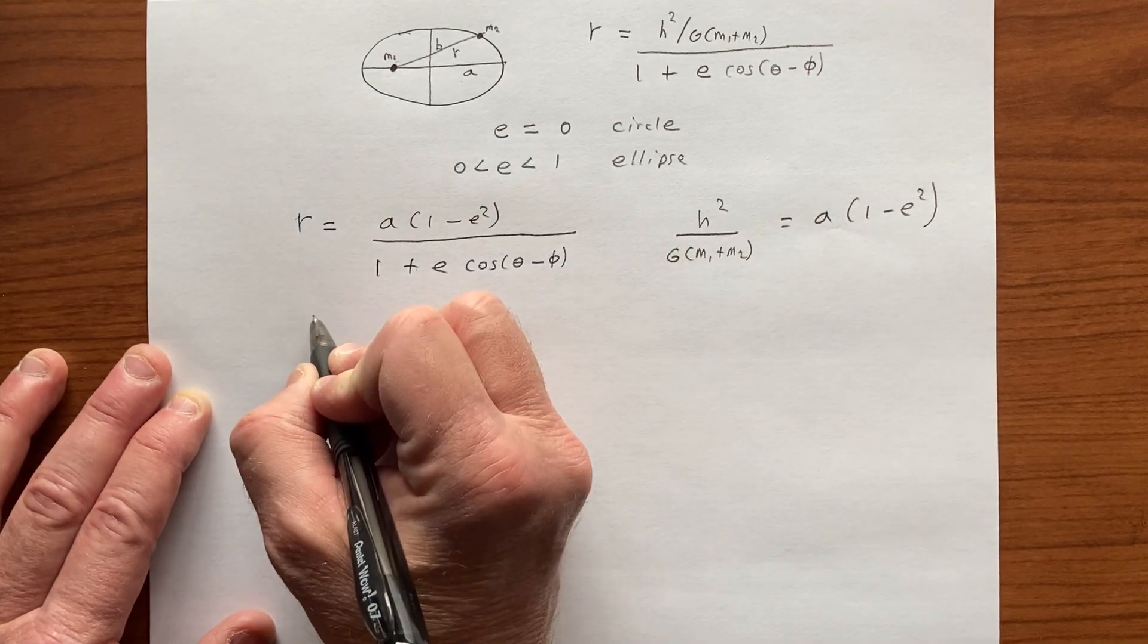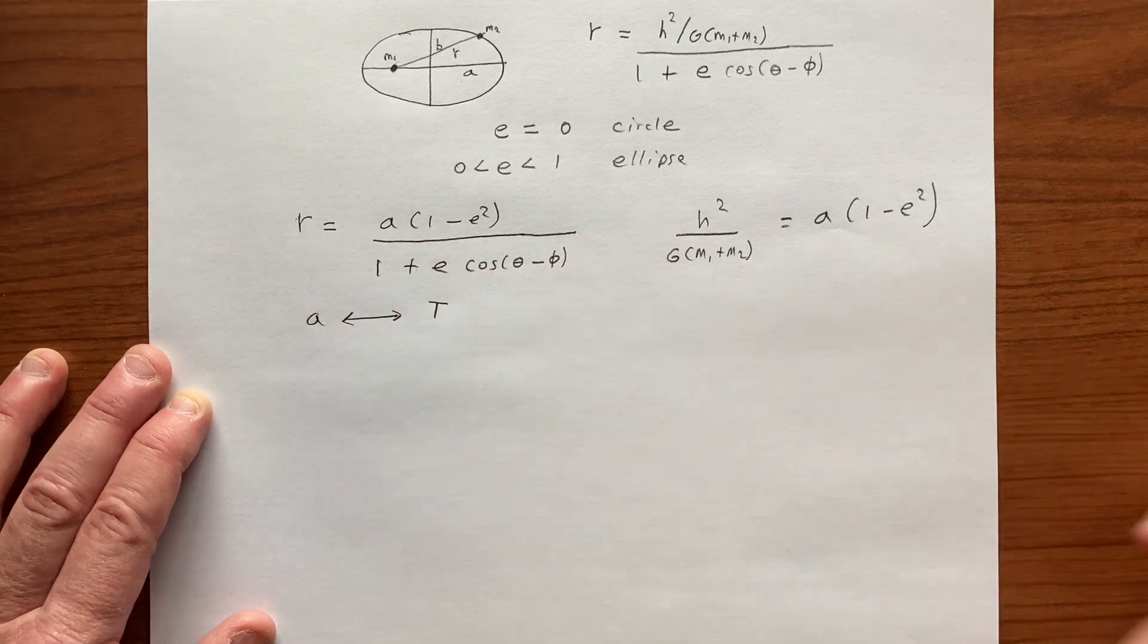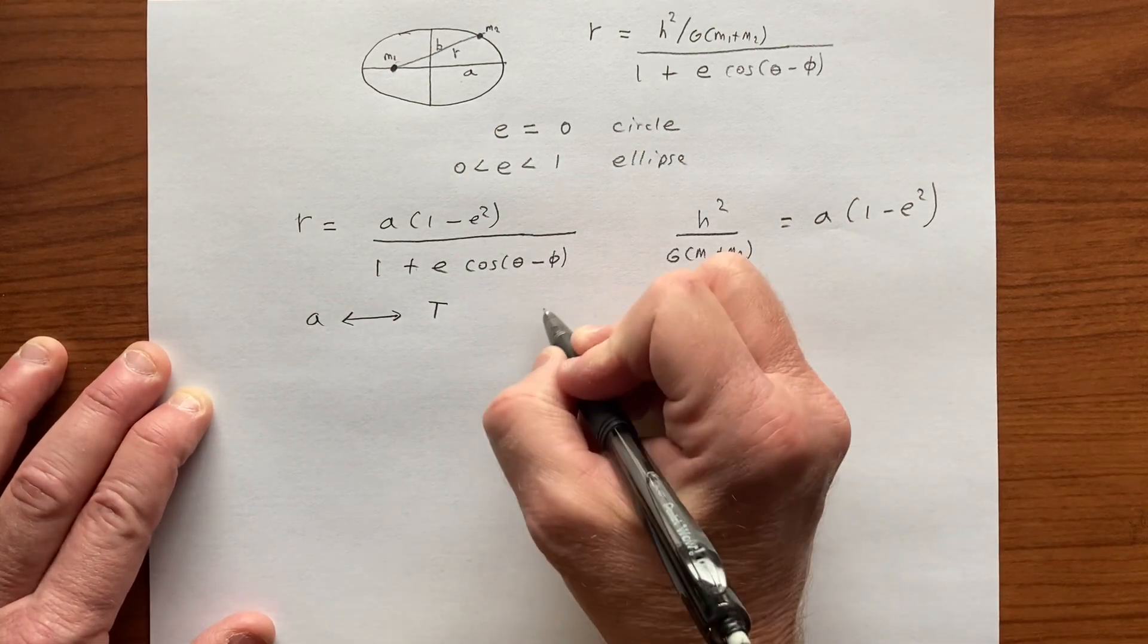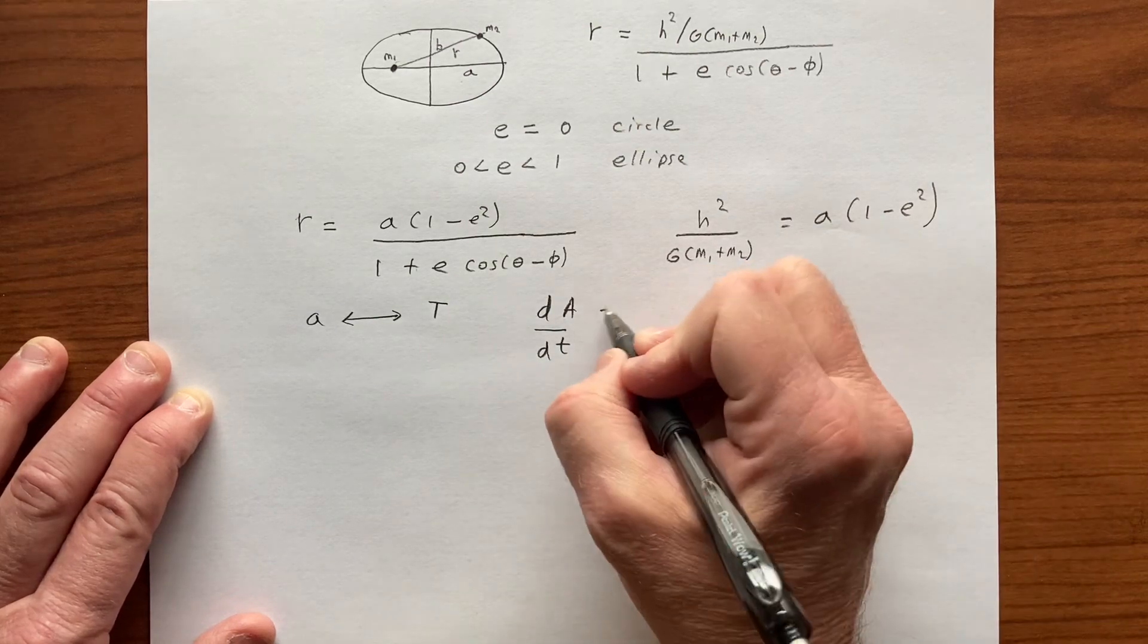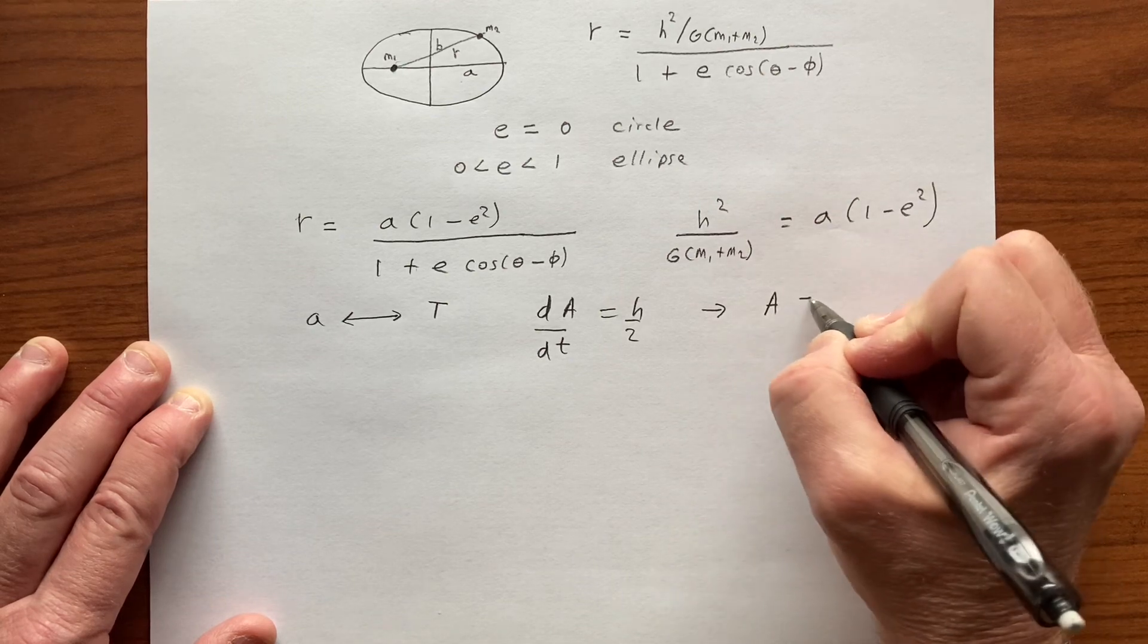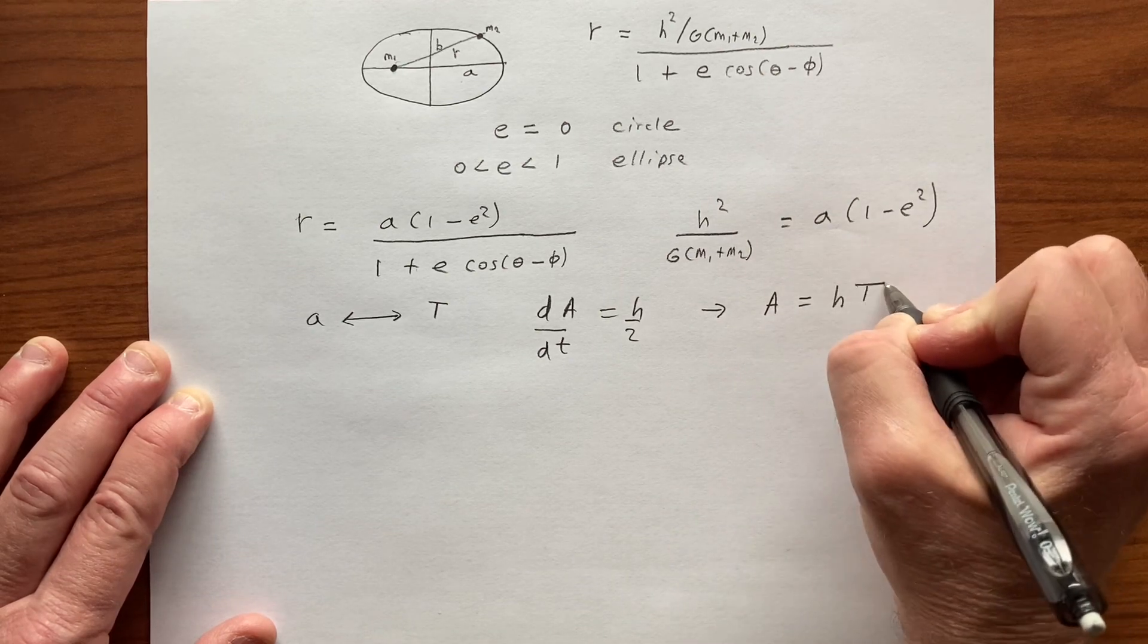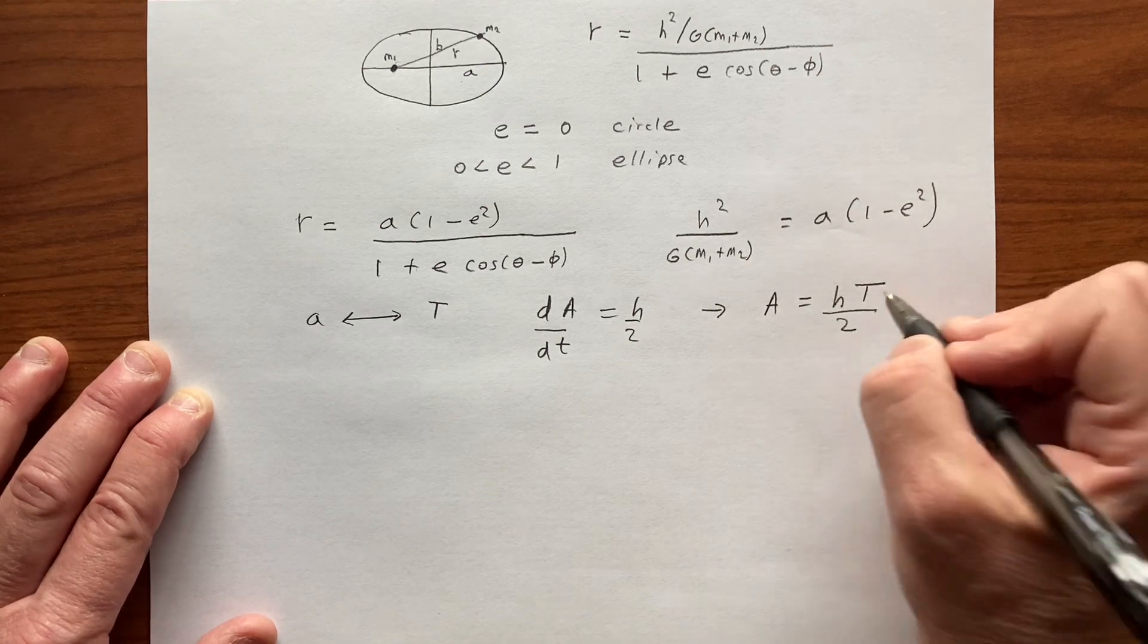So now we want to connect A from the major axis A to T, because this is Kepler's third law. And so from the second law, the rate of change of the area, we know that's the constant H over 2. What follows from that when we integrate is that we get the area, and the area is equal to H times the time it takes to go around, divided by 2. That's the period.